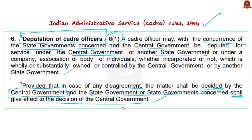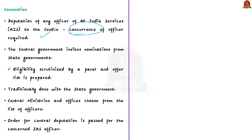Conventionally, before any officer of the All India Services is called for deputation to the centre, her or his concurrence is required. The central government invites nominations from the state governments, their eligibility is scrutinized by a panel, an offer list is prepared, and central ministries choose from this list. The order for central deputation is then passed. This entire convention was totally avoided in the case of the West Bengal Chief Secretary, and that is why there is controversy.